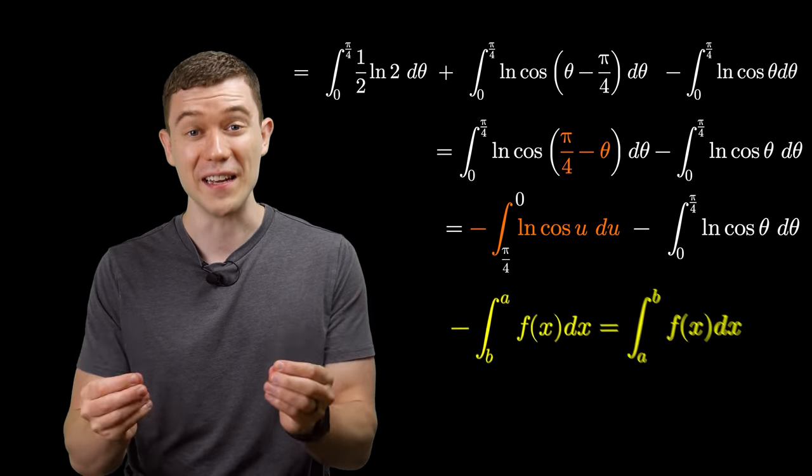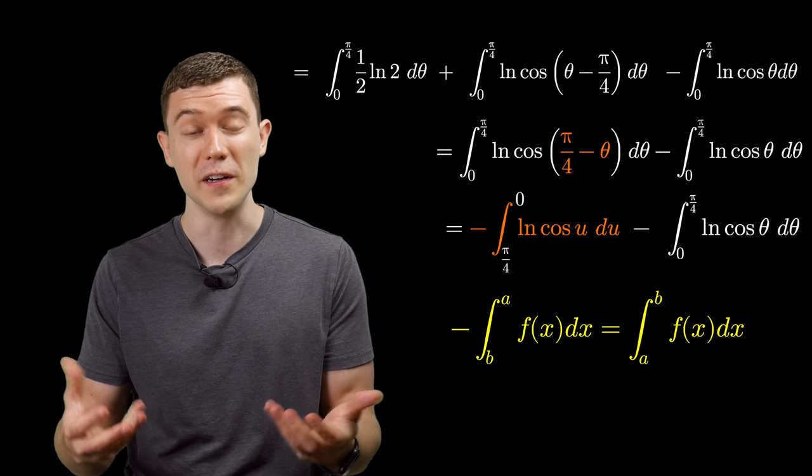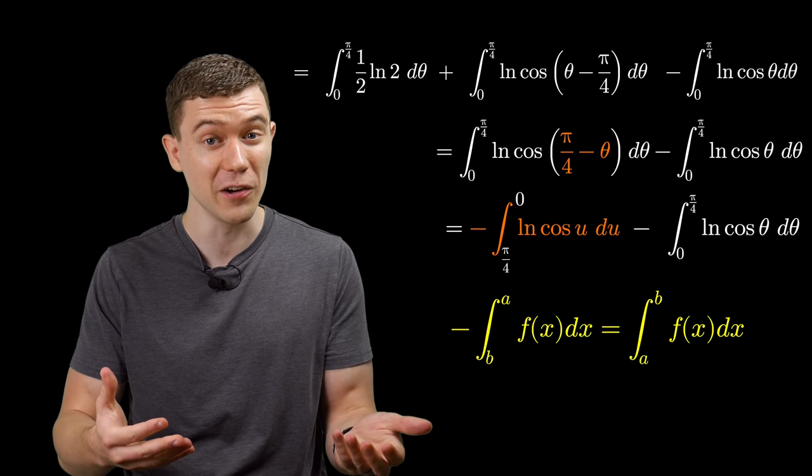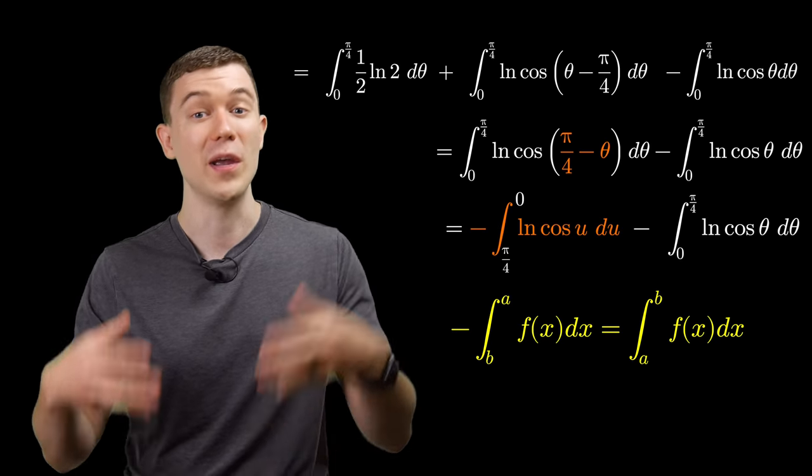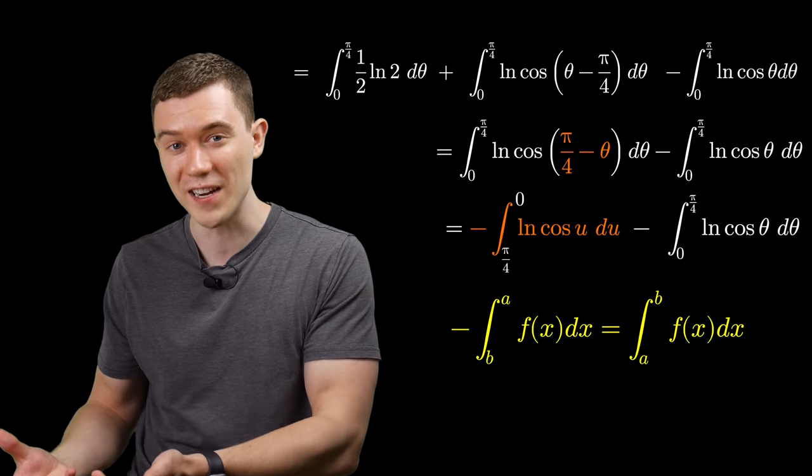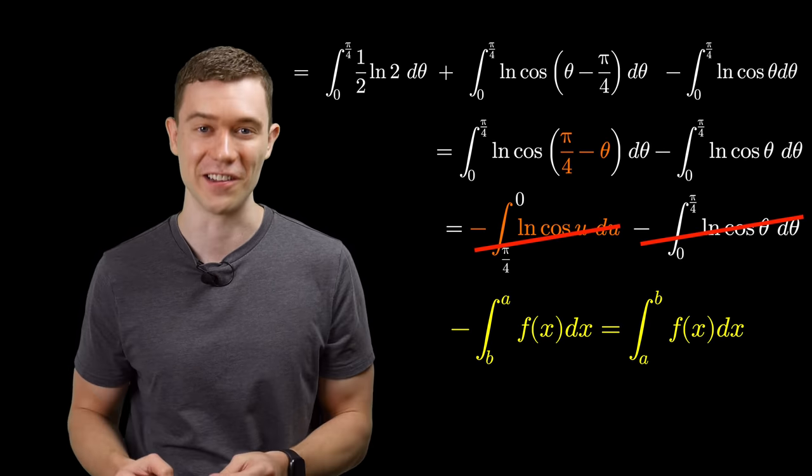So look at these two definite integrals. They're the same thing. Their underlying variables are different, but if we were to compute the integrals, the values would be exactly the same. We have an addition of one, a subtraction of the other, and so they cancel each other out.